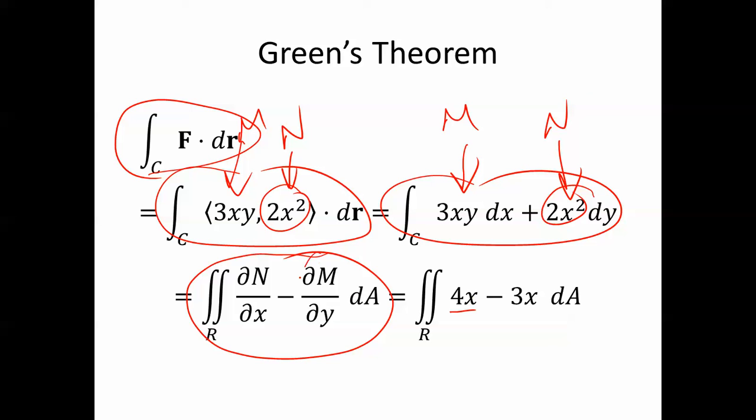Partial M partial y is 3x. So partial N partial x minus partial M partial y is 4x minus 3x, which is also known as x. And again, we're integrating this over the region R.